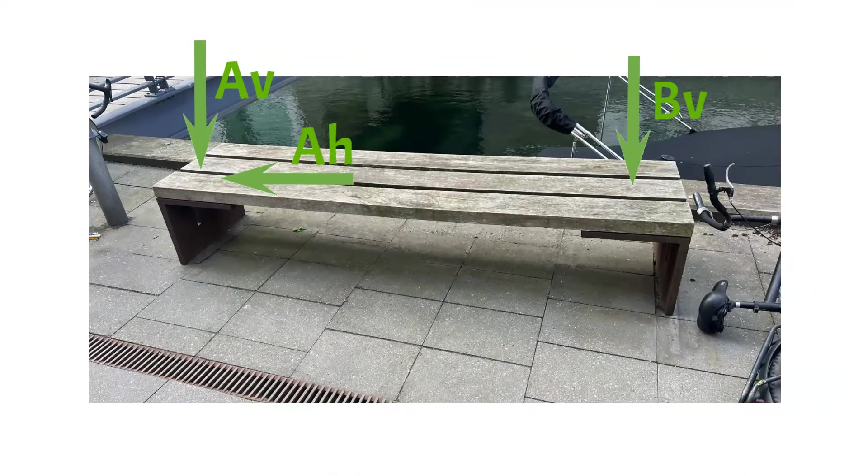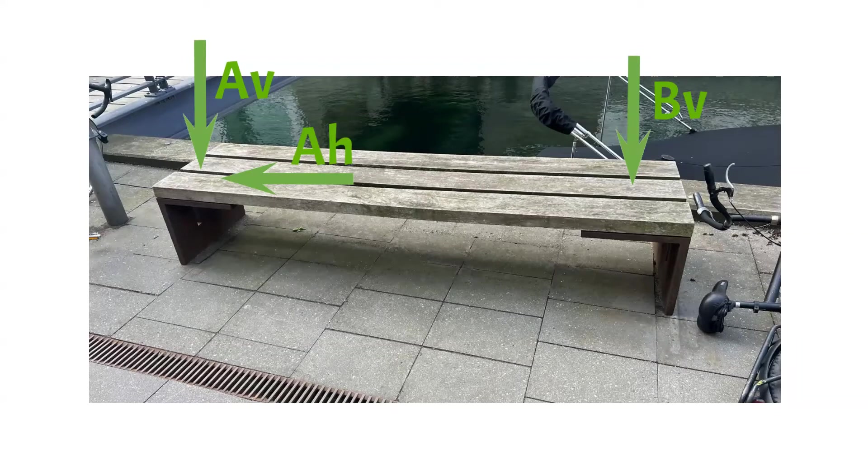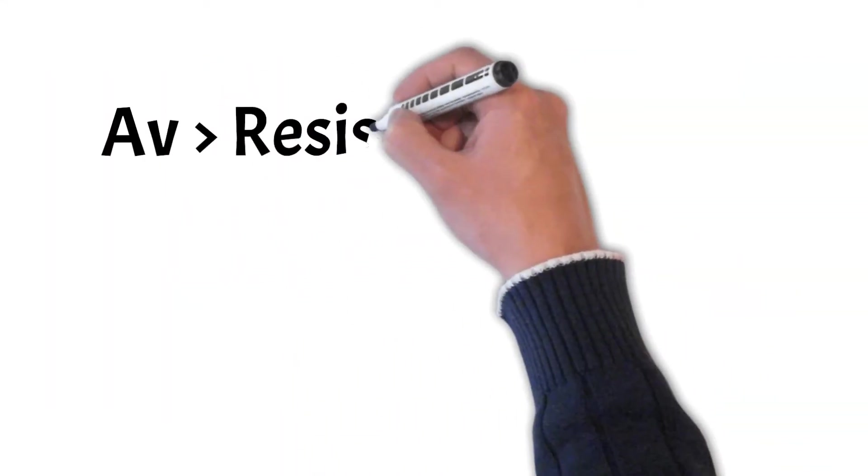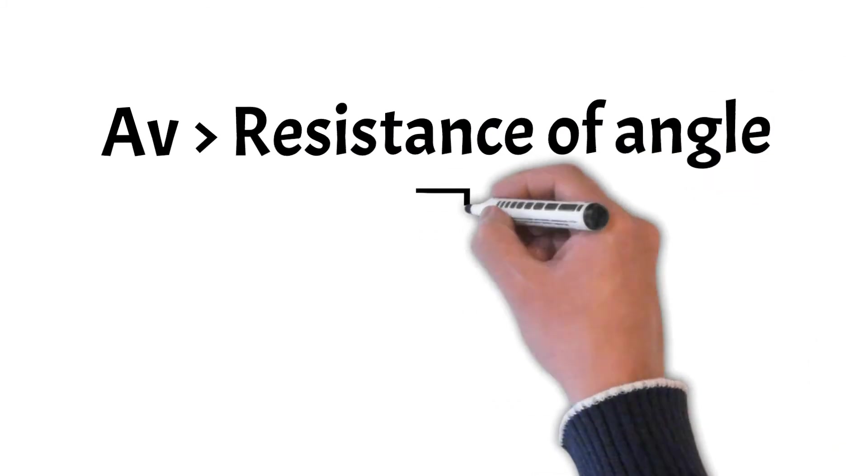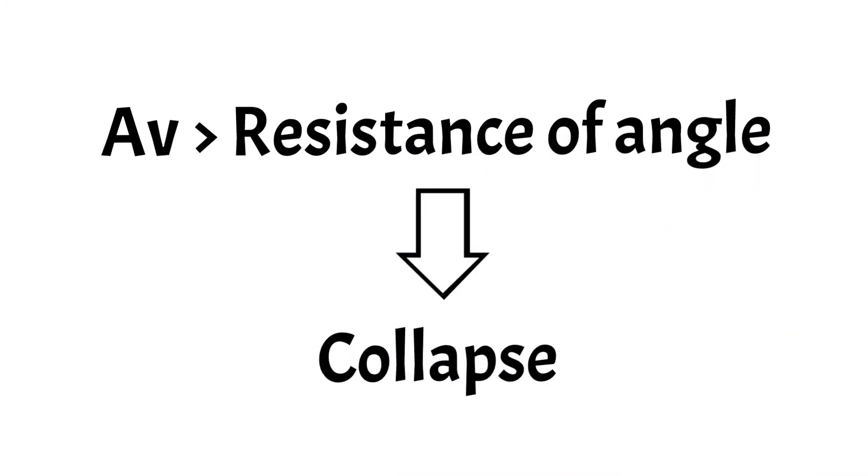But those supports need to be able to take up the support force. In the case that the steel plates, which are the supports, are not able to take the support force, the structure collapses.